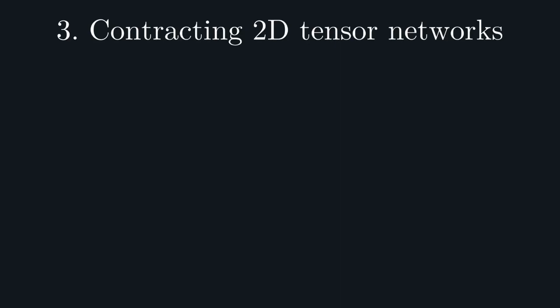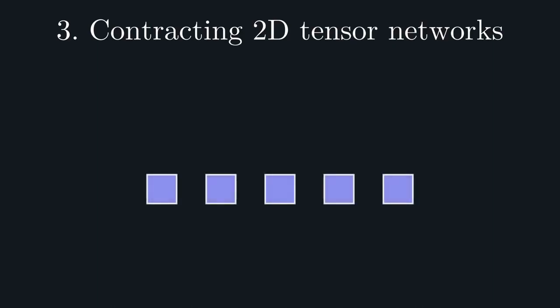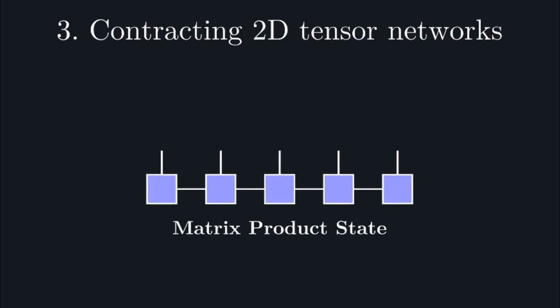The key to the algorithms we're going to consider are an important class of 1D tensor network states, known as matrix product states, which consist of a daisy chain of tensors arranged in a linear fashion such as this. These internal connections within the MPS are referred to as their bonds, and their dimension as the bond dimension.